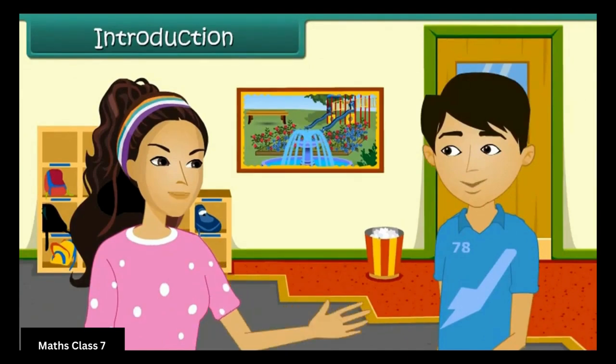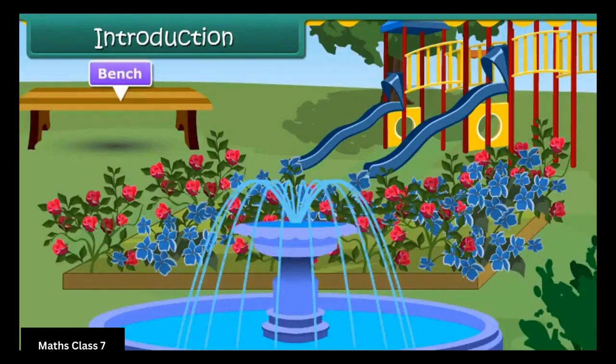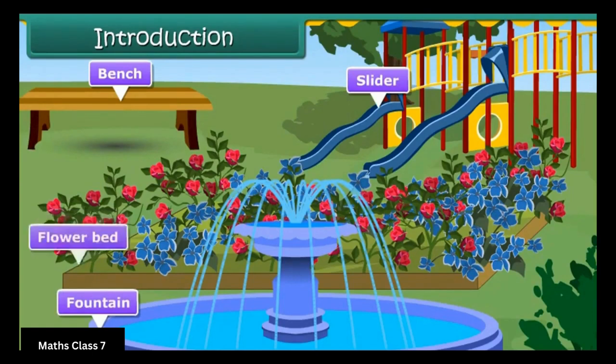Alia, can you analyze the different objects in this picture? Yes. There are benches, slider, fountain, flower bed, etc.